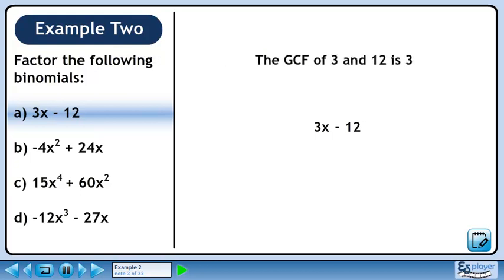The greatest common factor of 3 and 12 is 3. Rewrite 3x as 3 times x. Rewrite 12 as 3 times 4. Pull out the 3 from both terms. Collect what's remaining in a set of brackets. The answer is 3 times x minus 4.